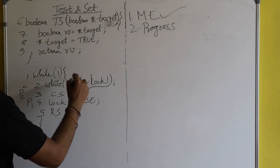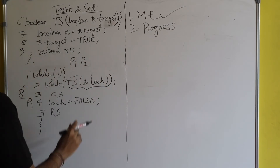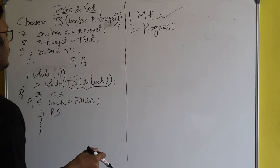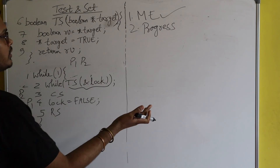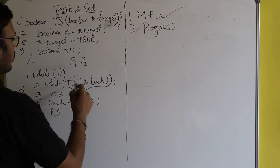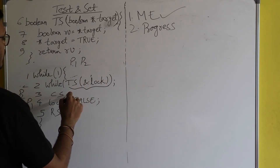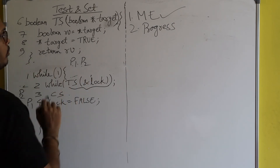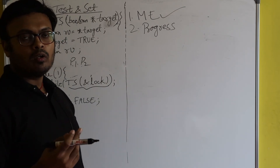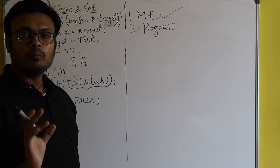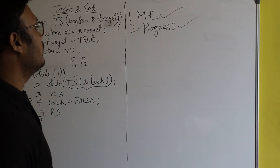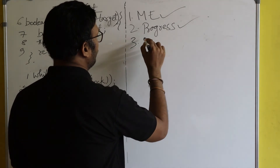If P1 wants to enter the critical section and P2 doesn't, and the lock value is false (critical section is vacant), P1 can clearly enter. P2 will not stop it — at any point in time there can be one process inside the critical section. So progress is also guaranteed.